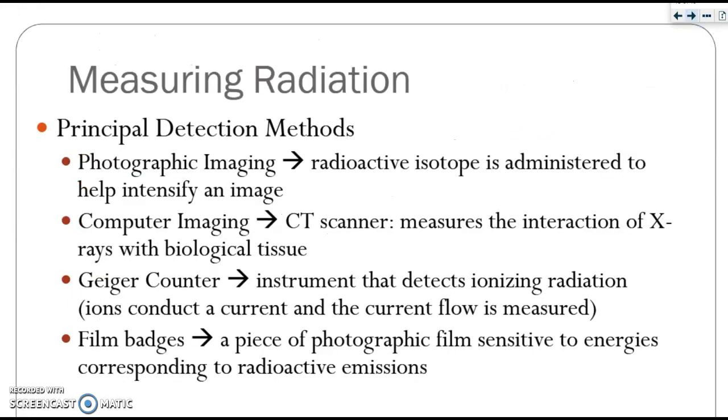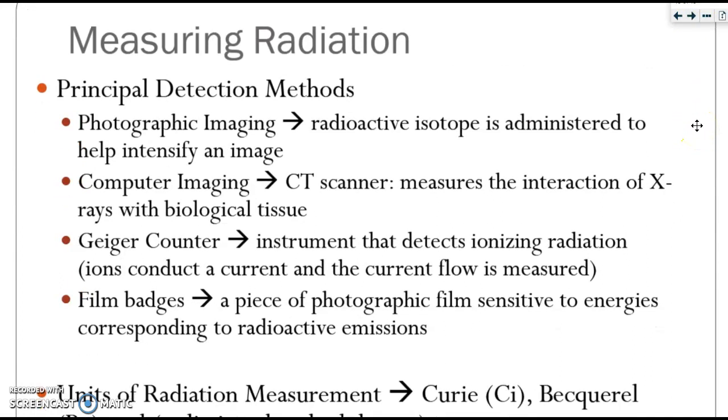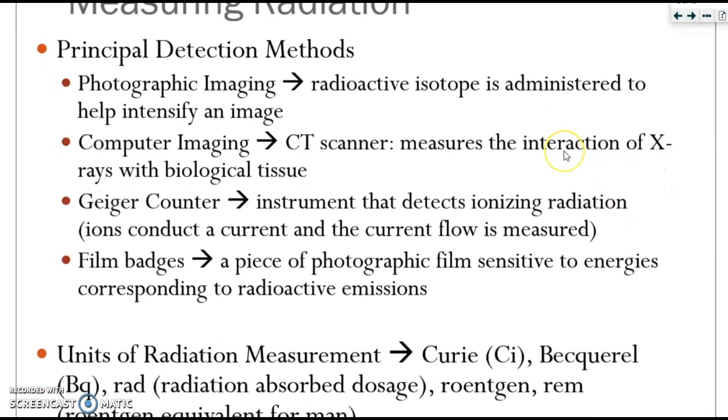The final slide in the PowerPoint is on measuring radiation. And it just kind of briefly discusses some of the ways that radiation is detected. We have photographic imaging, computer imaging. They can use a Geiger counter. They can use film badges. And the definitions are provided here for you.